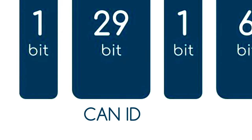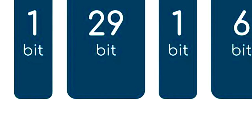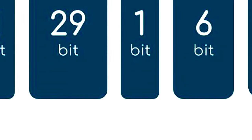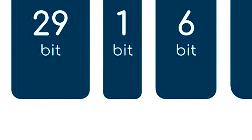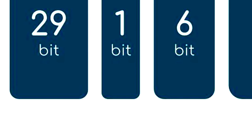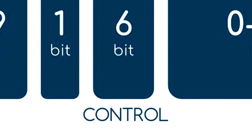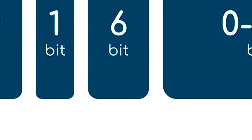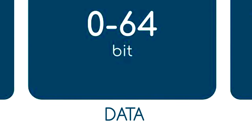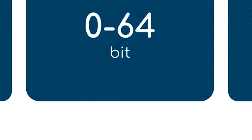SOF: the Start of Frame is a dominant zero to tell the other ECUs that a message is coming. CAN ID contains the message priority as well as functional address — for example, RPM or wheel speed. RTR: the Remote Transmission Request allows ECUs to request messages from other ECUs. Control informs the length of the data in bytes (0 to 8 bytes). Data contains the actual data values, which need to be scaled or converted to be readable and ready for analysis.